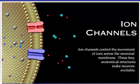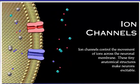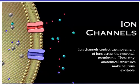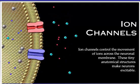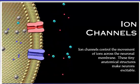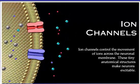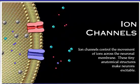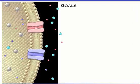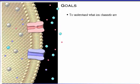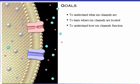Ion channels control the movement of ions across the neuronal membrane. These tiny anatomical structures make neurons excitable. Your goals for learning are to understand what ion channels are, to learn where ion channels are located, and to understand how ion channels function.